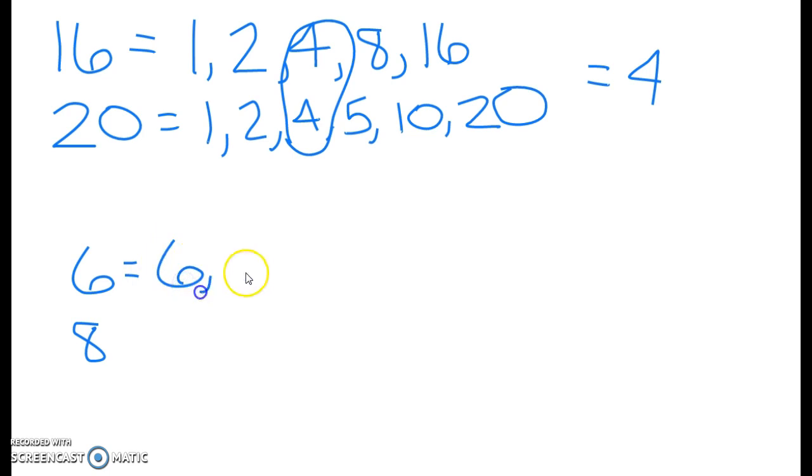So you just start doubling 6, 12. Sorry, not doubling - you double for the first step and then you add the number to itself. 18, 18 plus 6 is 24, 24 plus 6 is 30. And we can continue going if we need to, but let's do the other number.